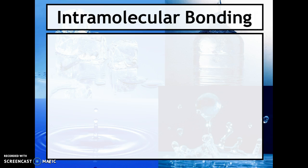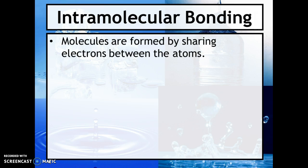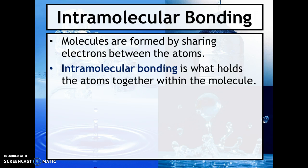Let's start with intramolecular bonding. The prefix 'intra' tells us that we are talking about bonds, not intermolecular forces. If there's an intramolecular bond, something is sharing electrons. That's a covalent bond between two nonmetals. Remember, a bond is always stronger than a force. Intramolecular bonding is what actually holds atoms together within the molecule — it's what makes hydrogen and oxygen stick together in water.